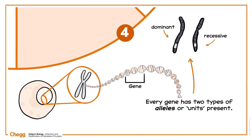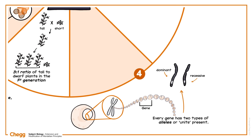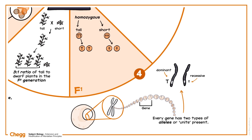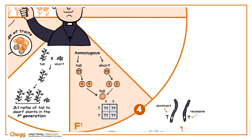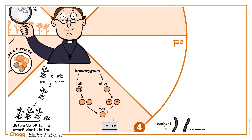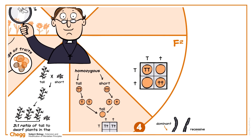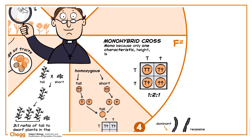One allele is dominant and one recessive. Offspring inherit one allele from each parent in fertilization. The parent plants Mendel started with are homozygous, represented by two big T's, or two little t's. In F1, all offspring are heterozygous, represented by a big T and a small T, but the tall alleles are dominant, hiding the presence of the dwarf trait. Three different genotypes are obtained in the F2 generation: dwarf homozygous with two small t's, tall homozygous with two big T's, and heterozygous with a big T and a small T. The ratio of genotypes is 1 to 2 to 1. This is known as a monohybrid cross — mono is the prefix because only one characteristic, height, is being considered.